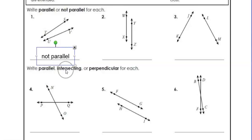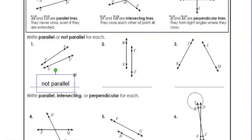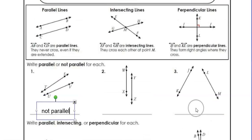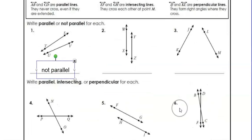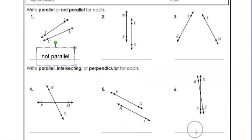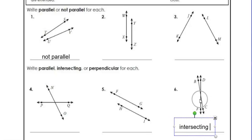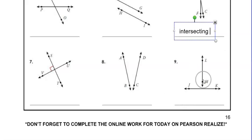We want to know if each example is parallel, intersecting, or perpendicular. Let's do number six together. Are these lines parallel — meaning they never cross? Are they intersecting — meaning they cross at a certain point? Or are they perpendicular — meaning you can make a little right-angle box in the corner? Looking at number six, you would notice that they are intersecting, because the lines cross each other.